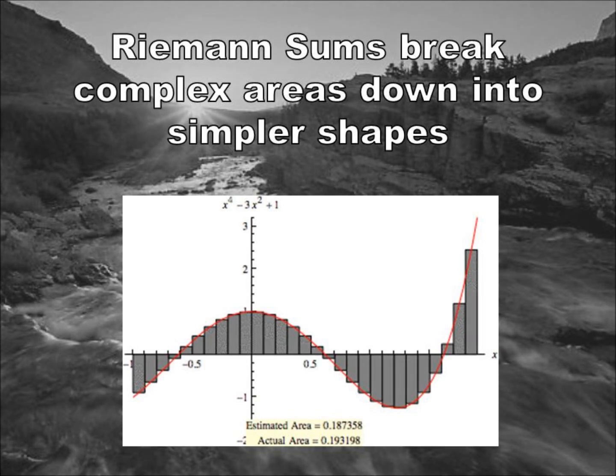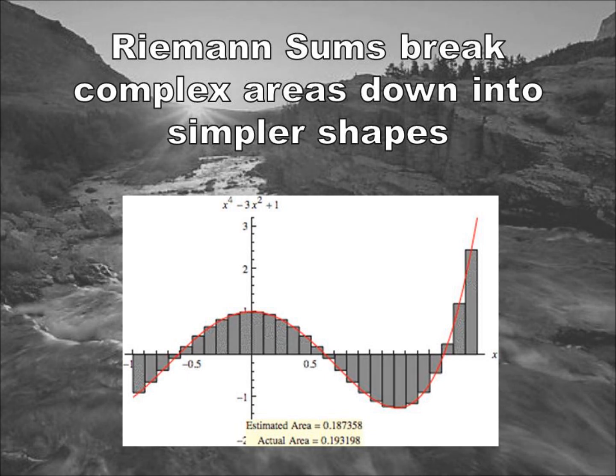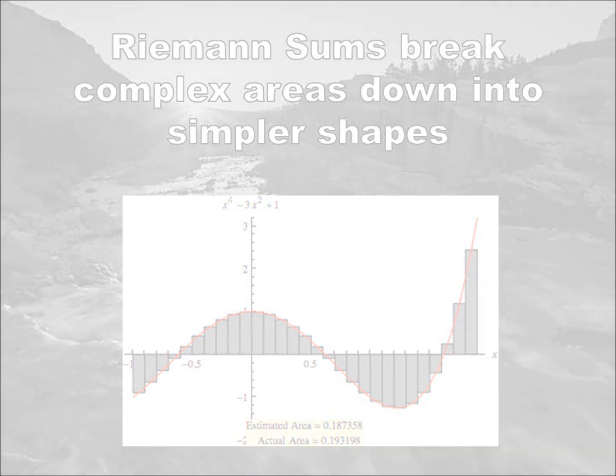A Riemann sum is a method of approximating an integral that uses the height of a given function at evenly distributed intervals to find the area under a curve by breaking it down into simple rectangular shapes. It's slightly prone to error but usually is close enough to get the job done.